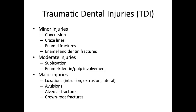Next, we have moderate injuries, which involve subluxations and enamel, dentin, and pulp fractures — fractures that are more complicated and involve the nerve of the tooth. These are our Ellis class 3 and class 4 fractures. Moderate injuries introduce a higher cost and more complex intervention. Typically, endodontic treatment is involved, like a partial pulpotomy, a full pulpotomy, or even a pulpectomy.